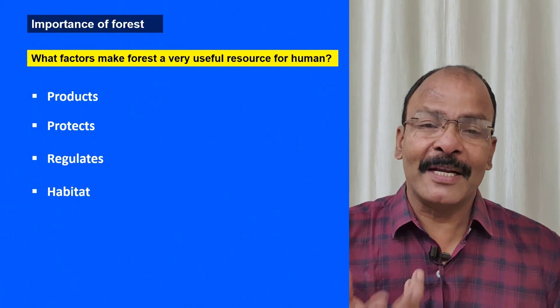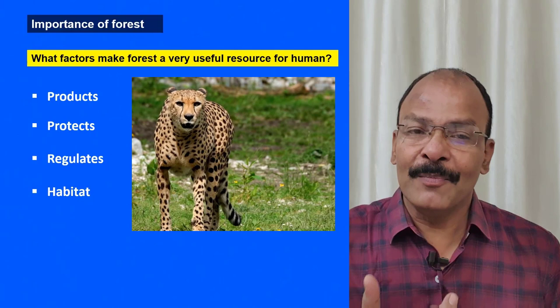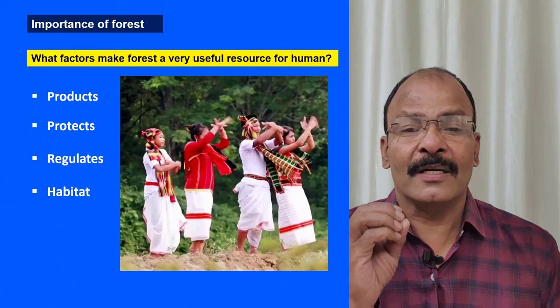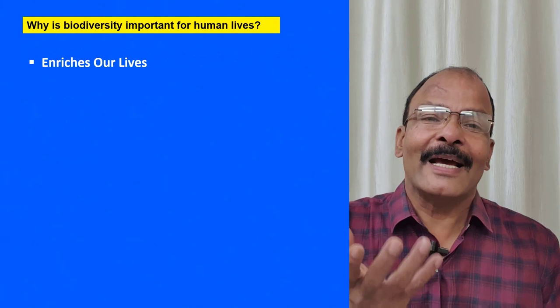Forest is also instrumental in giving us rainfall, because wherever there is forest, temperatures are lower, and lower temperatures develop conditions for precipitation. Fourth, forest is a habitat — a place where wild animals can live and tribal people can live. These are the four important factors that make forest a resource for human beings.